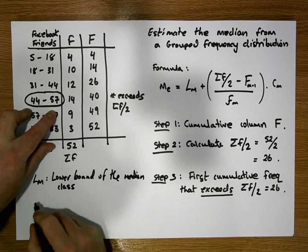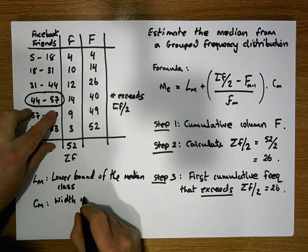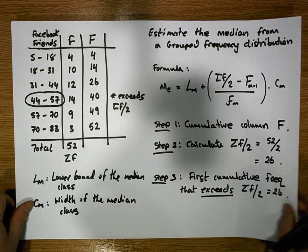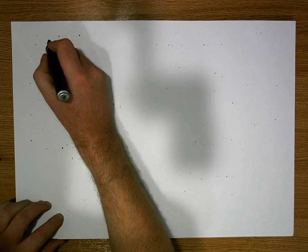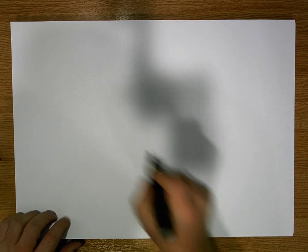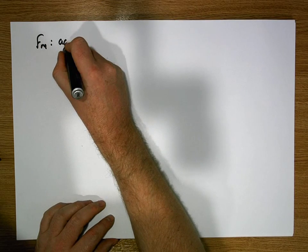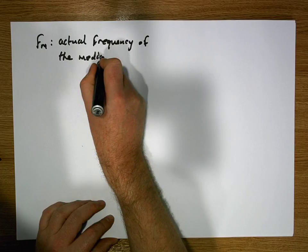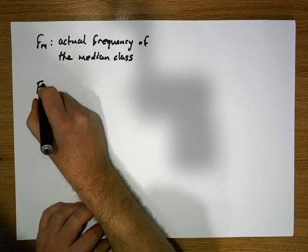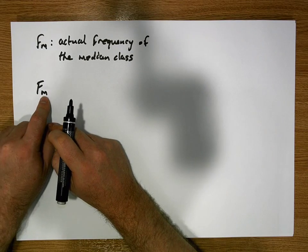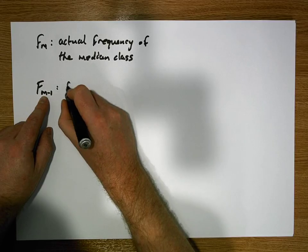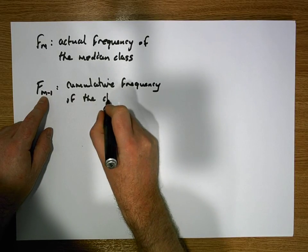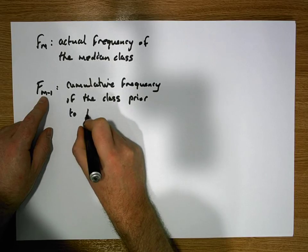C of M is the width of the median class. Small f of M is the actual frequency of the median class. Capital F of M would be the cumulative frequency of the median class, but we need the one before it. So it's the cumulative frequency of the class before or prior to the median class.